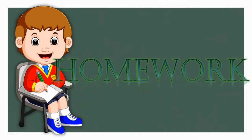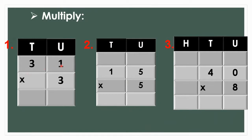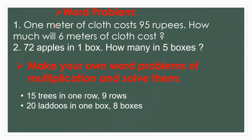Students, now you have to do the homework. First: 31 multiplied by 3. Second: 15 multiplied by 5. Third: 40 multiplied by 8. Word problems: 1 meter of cloth costs 95 rupees — how much will 6 meters cost? Second: 72 apples in 1 box — how many in 5 boxes? Arrange vertically and solve. Also make your own word problem of multiplication using the given information and solve it.